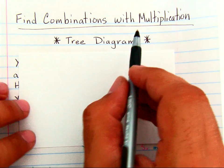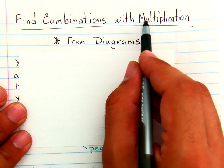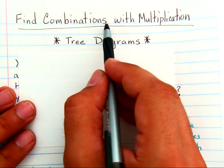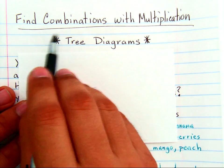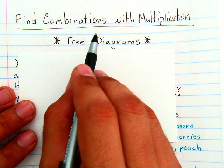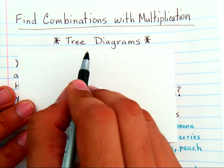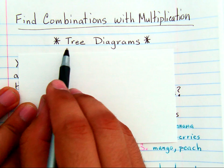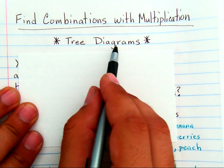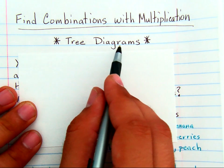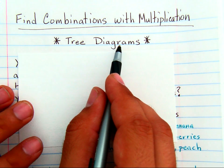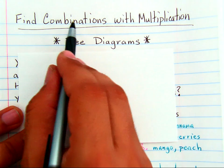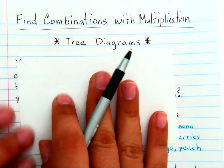We've already talked about using multiplication to find combinations of different things. We talked about using tables and arrays. Today I want to talk about tree diagrams. Tree diagrams is another strategy for finding combinations with multiplication.